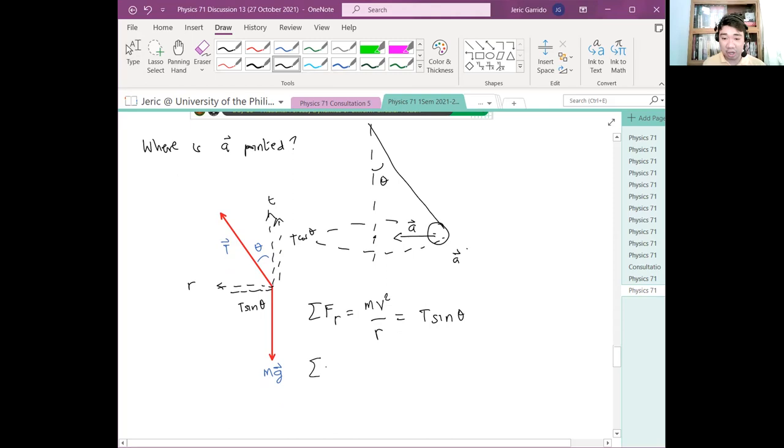So summation of forces on the tangential direction is equal to what? Okay. Anong gusto mo sa tetherball? Ang gusto mo lang sa tetherball ay umikot siya. Ayaw mo sa kanya na gumewang-gewang. Ayaw mo umakyat baba yan. Kasi pag umakyat baba yan, there is an acceleration in the tangential direction. You don't want that. Hence, what can we say about the summation of forces in the tangential direction? Dapat zero lang yan. Yes, exactly. It should be zero. And therefore, this is just equal to T cosine theta minus mg. And thus, we have shown that the tension is simply mg over cosine theta.